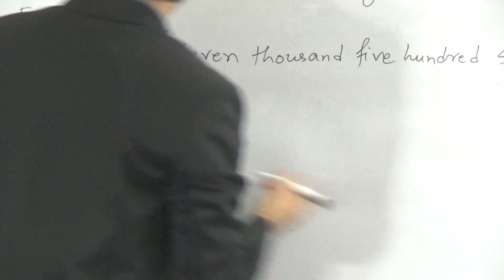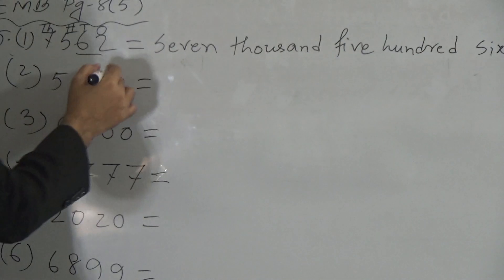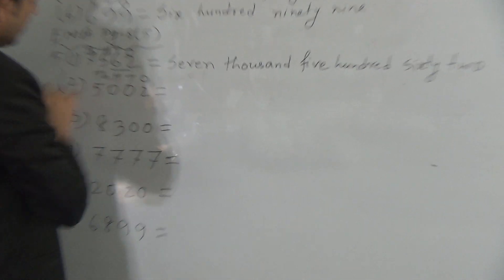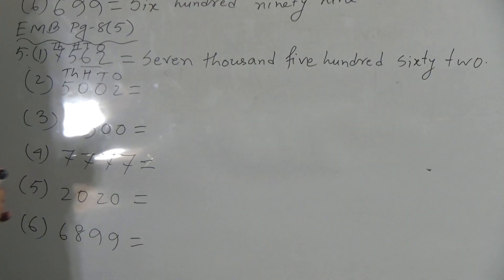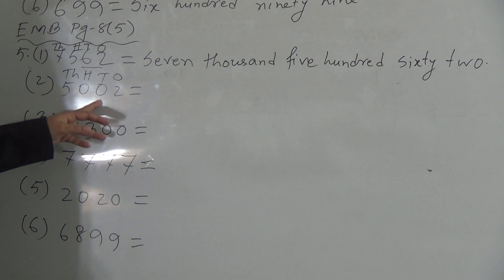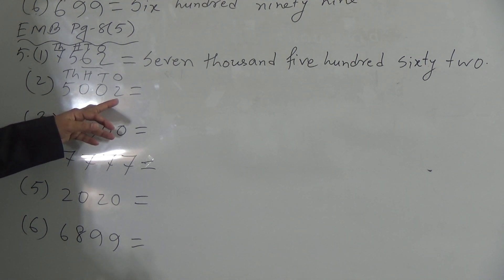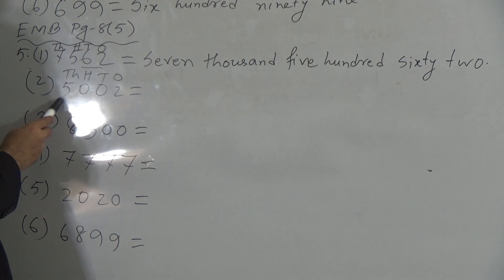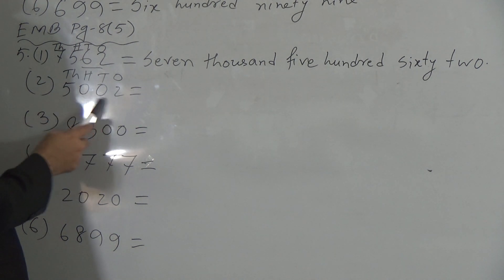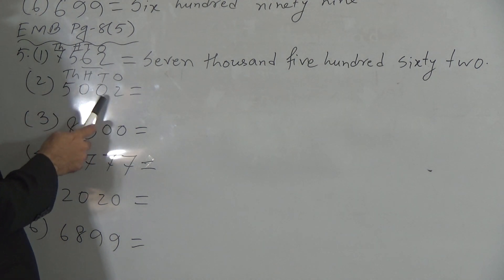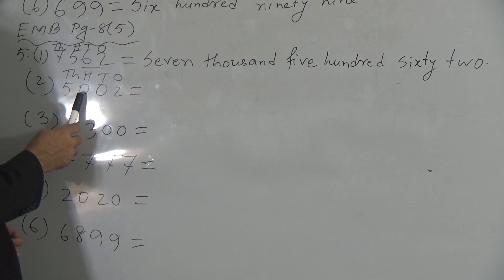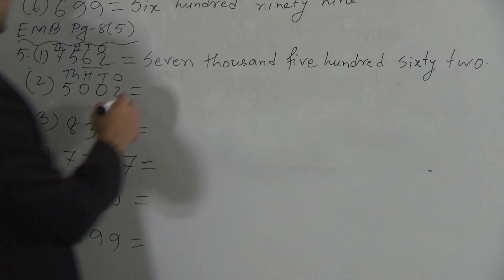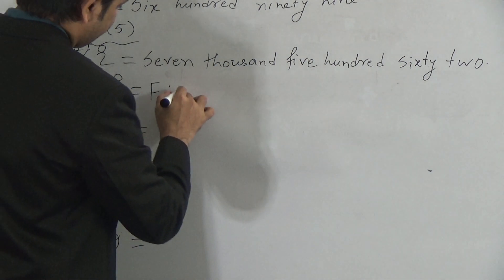Go to the next question. Here, 5 is in the 1000's position, 0 is in the 100's position, 0 is in the 10's position, and 2 is in the 1's position. So we can read this as 5,002. Because there are no digits except 0 in the 100's and 10's positions, we read it as 5,002.